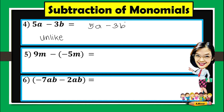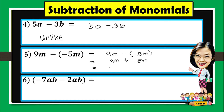Number 5: 9m minus negative 5m. From what we have studied about subtraction of integers, you need to add the opposite. The opposite of negative 5 is positive 5, then this becomes addition. So 9m plus 5m — the answer is 14m.